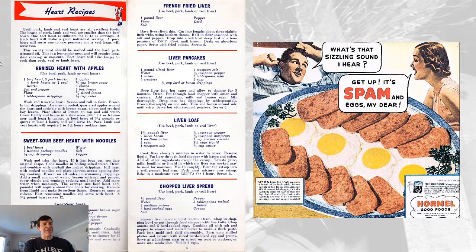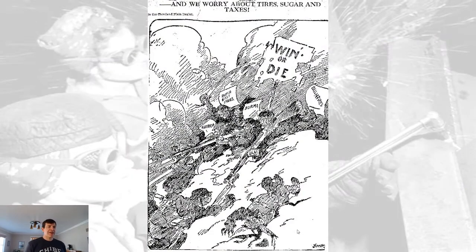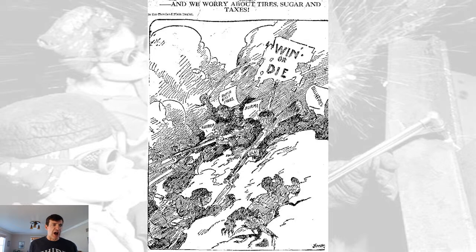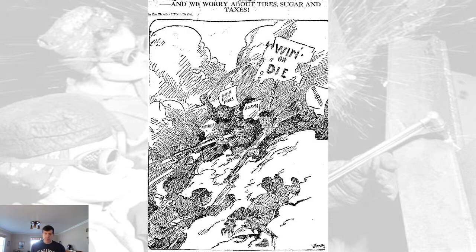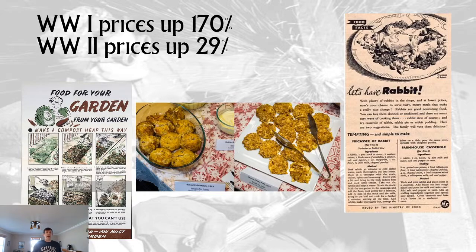Troops at the front had little sympathy for the sacrifices people had to make back home. A cartoon shows soldiers doing the real work — fighting an enemy who will win or die — and it says 'and we worry about tires, sugar, and taxes.' But it worked: in World War I, prices went up 170% from April 1917 to November 1918, and nearly doubled again in 1919. During World War II, prices only went up 29%.